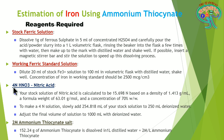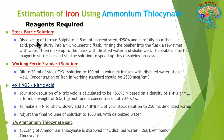The reagents required are: stock ferric solution, working ferric standard solution, 4 normality nitric acid, and 2 molarity ammonium thiocyanate salt. For the stock ferric solution, we take 1 gram of ferrous sulfate, dissolve it in 5 ml of concentrated sulfuric acid to form a slurry, pour it into a 1-liter volumetric flask, rinse the beaker thoroughly with water, and make up to the 1-liter mark with distilled water. Use a magnetic stirrer to ensure complete dissolving.